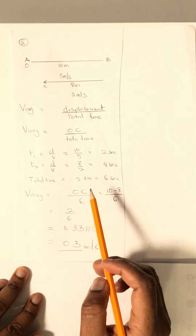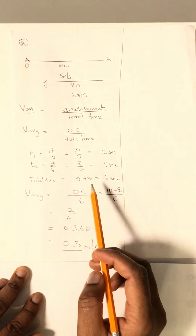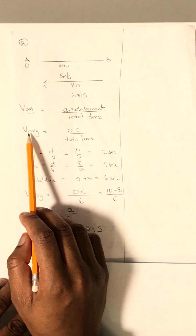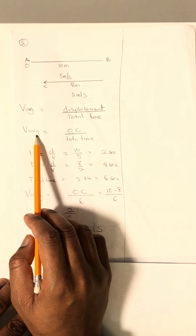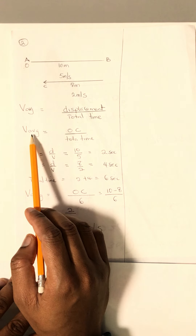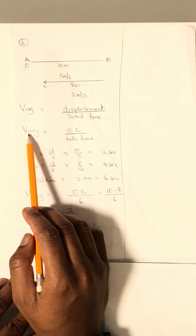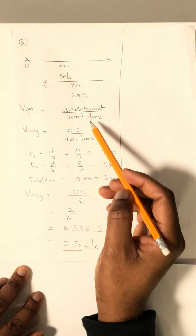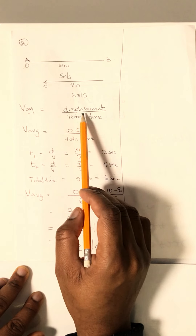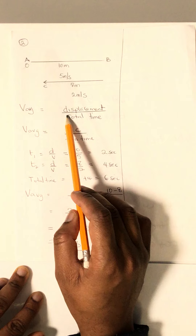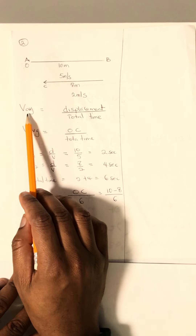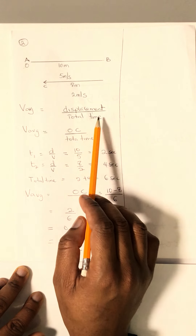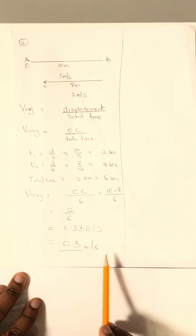This problem is sometimes confusing, but we need to be very conscious whenever we are asked to calculate average velocity, which is not like average speed or average acceleration. Average velocity is always calculated with displacement over total time, which gives us 0.33 meters per second.